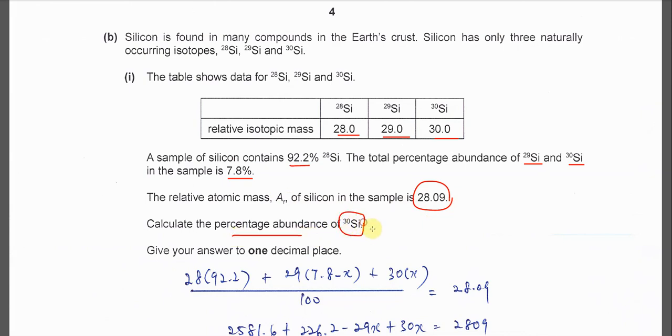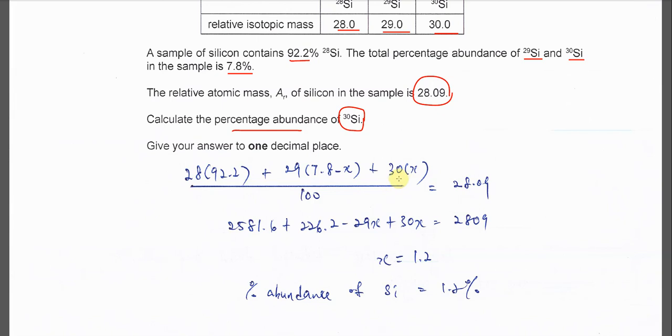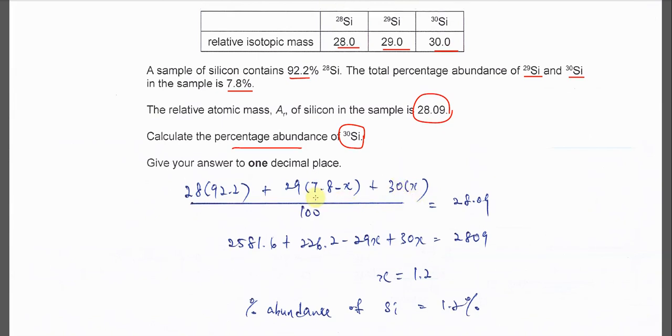Given the relative atomic mass is 28.09, calculate the abundance for the silicon 30. This one is very easy. You need to put one unknown. It's better to put the unknown with the silicon 30. So you just put this 7.8 minus x for the relative abundance of the silicon 29. This one as usual: 28 times 92.2 plus 29 times 7.8 minus x, so x is the abundance of the silicon 30. When you sum up this and these two you get 7.8.